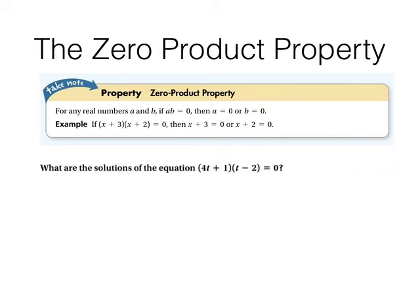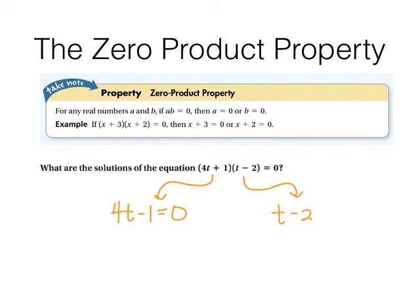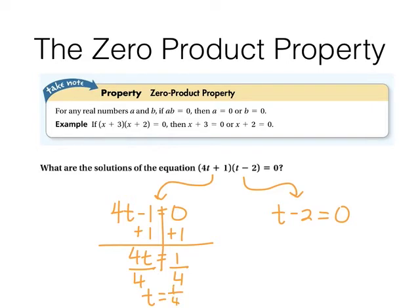If I have a factored expression in an equation, each factor can be set equal to zero and you solve to find your solutions. So take each set of parentheses and make yourself two mini equations. We say the product is zero, so each factor can equal zero. Solve your mini equations — one-fourth is one answer, and adding 2 to each side gives t equals 2. So the values that make this equation true are one-fourth and 2.